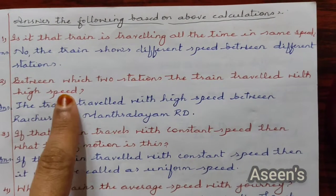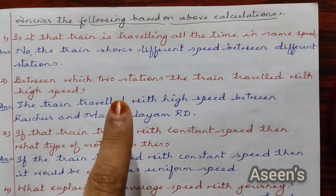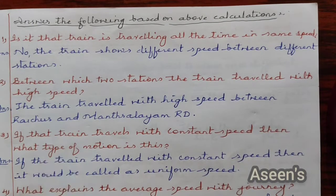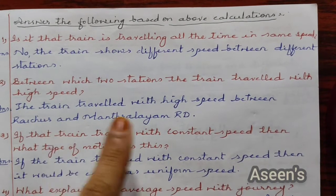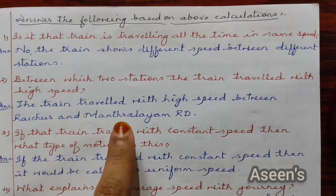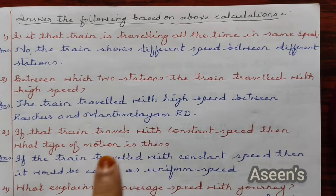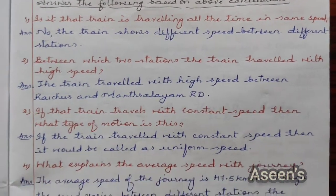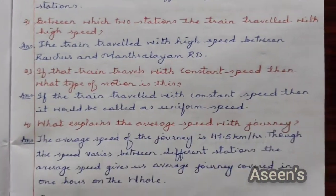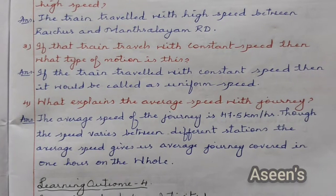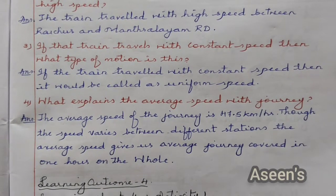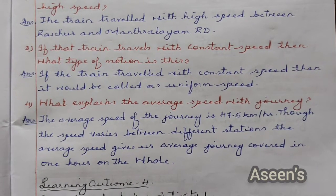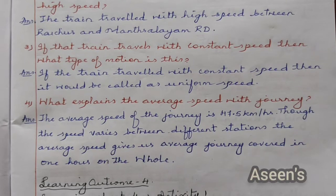Second: between which 2 stations did the train travel with the highest speed? It was between Raichur and Mantralayam Aadi. Third: if the train travels with constant speed, then what type of motion is this? It would be called uniform speed.